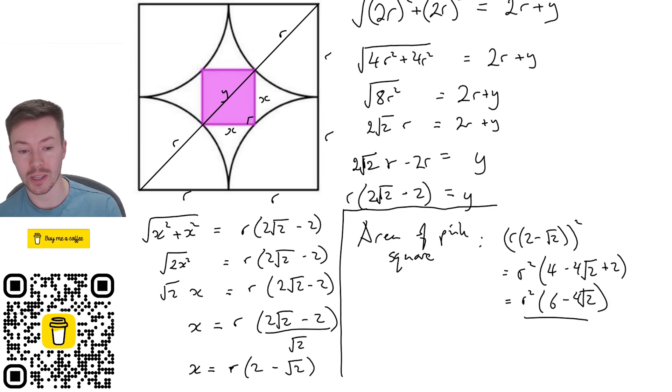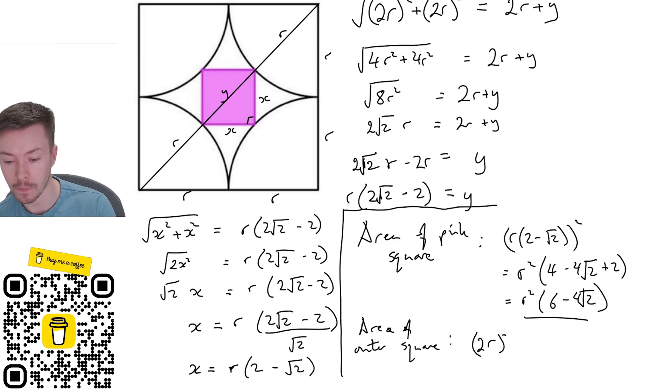We're nearly there now because actually the area of the full square is quite easy to work out. The area of the outer square, well that's going to be 2r times by 2r or 2r squared. That will give me 4r squared.